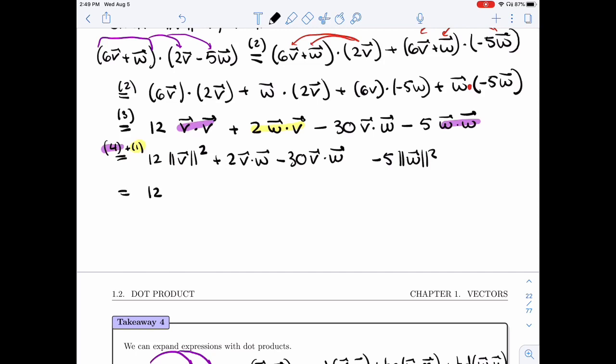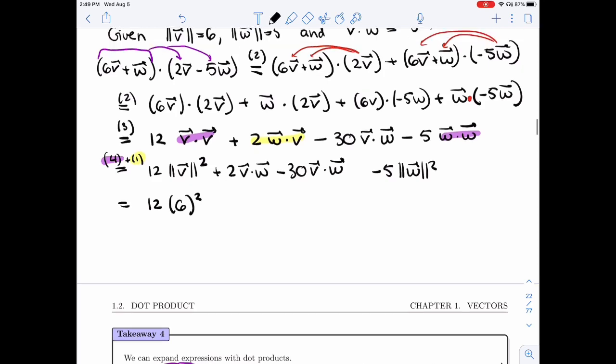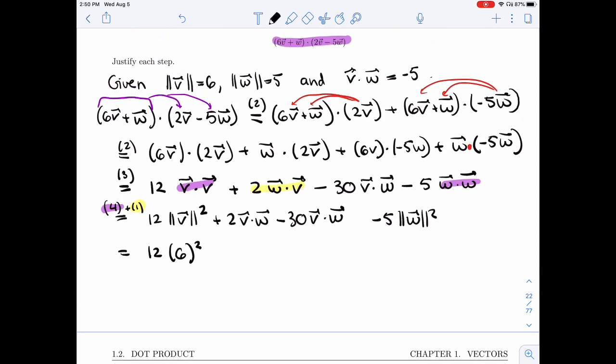So I'll just replace by what we're given. Length of V is 6. This is minus 5. That's minus 5. And this is 5 squared. So I need to compute this. I've done it already. I got 447. So 12 times 36, 2 times minus 5, minus 30 times minus 5. Yep. So I got 447.